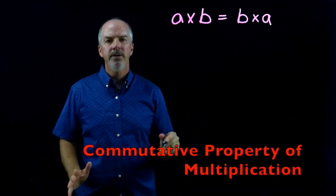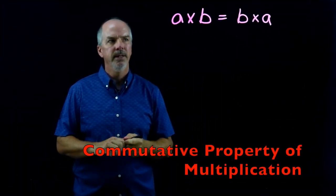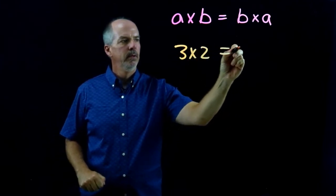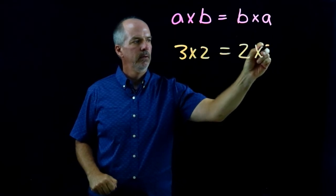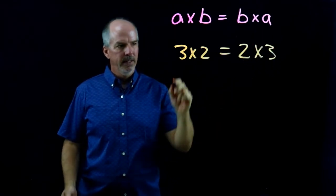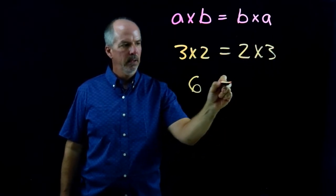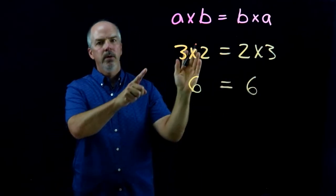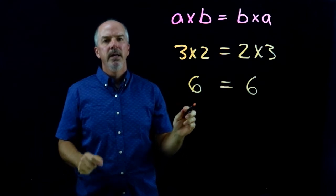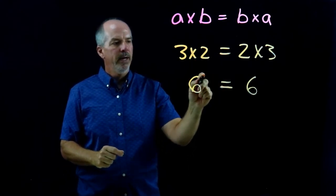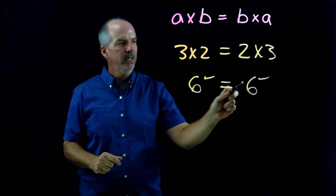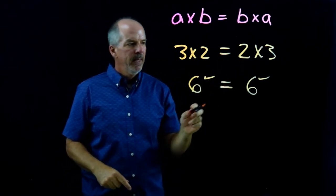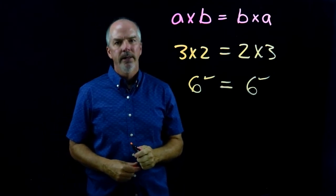The commutative property also holds for multiplication. So if we have 3 times 2, we can see that 6 equals 6. So the commutative property for multiplication, we can change the order without changing the product, because both cases we get a product of 6. We can change the order of the factors that we multiply and still get the same product.